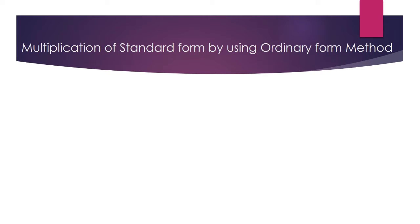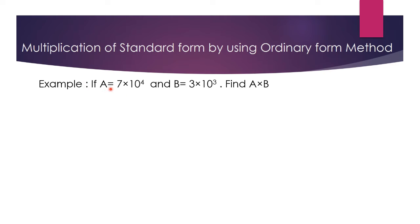Students, multiplication of standard form using the ordinary form method. First of all, we will learn how we can multiply standard form using the ordinary form method. Let's take an example: if a is equal to 7 multiplied by 10 to the power 4, and b is equal to 3 multiplied by 10 to the power 3, find a multiplied by b.